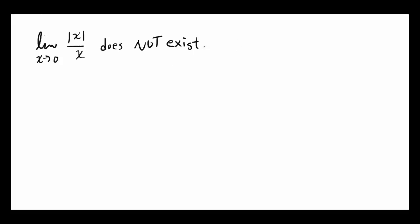In this video, I will attempt to show you that the limit as x approaches 0 of absolute value of x over x does not exist. It's non-existent. And how we can think about this is by breaking this function down.